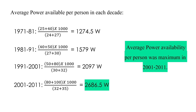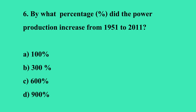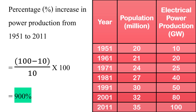The last question is: by what percentage did the power production increase from 1951 to 2011? The formula is: increase divided by original, into 100. In 1951, power production was 10 gigawatts, and in 2011 it was 100 gigawatts, so it increased by 90 gigawatts. Substituting in the formula: 90 divided by 10 into 100 equals 900%.